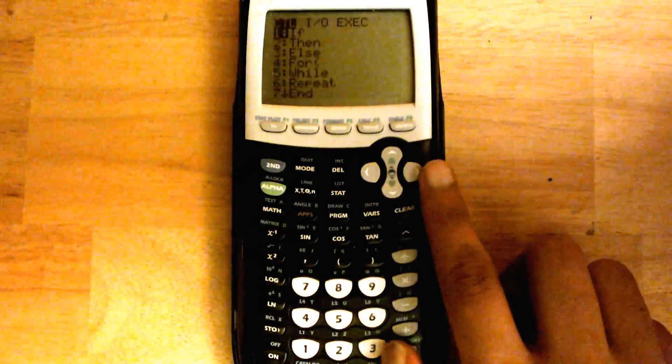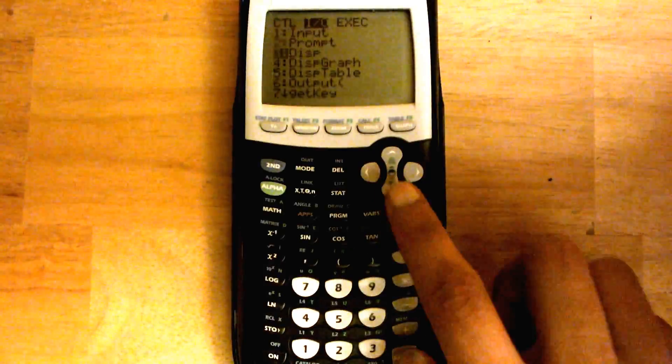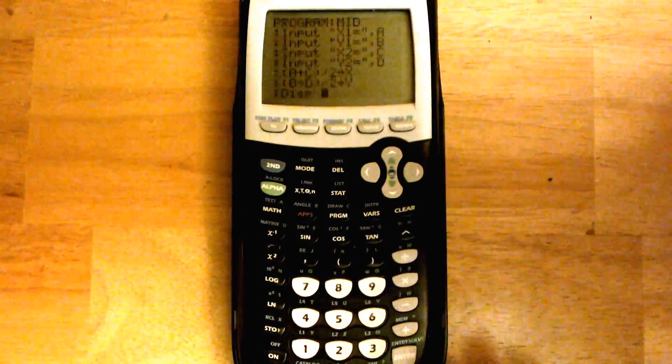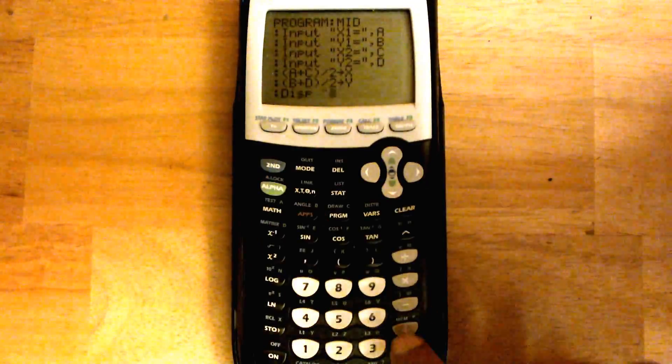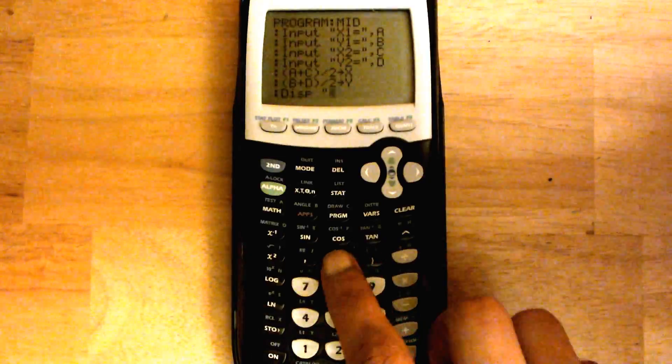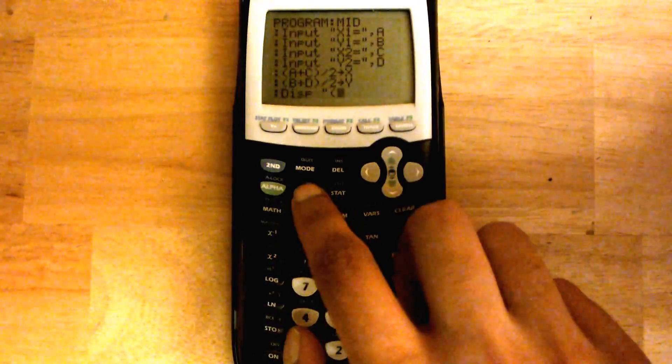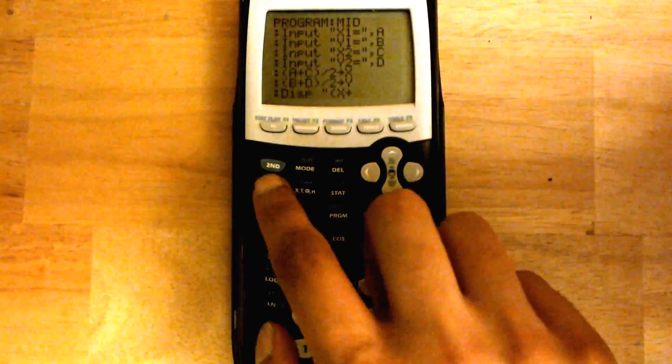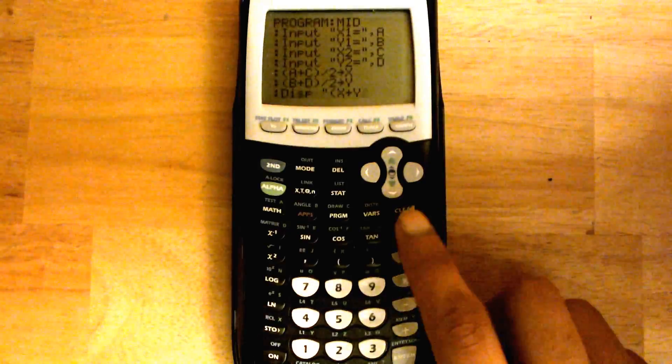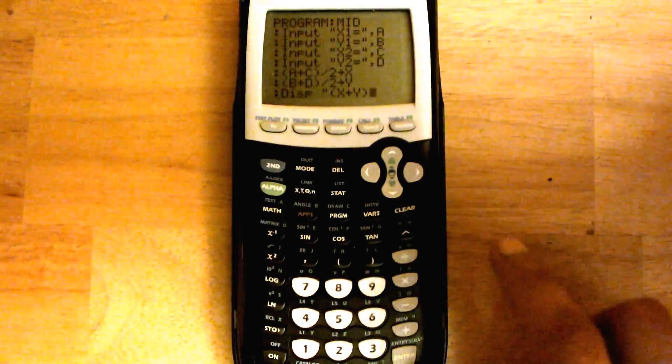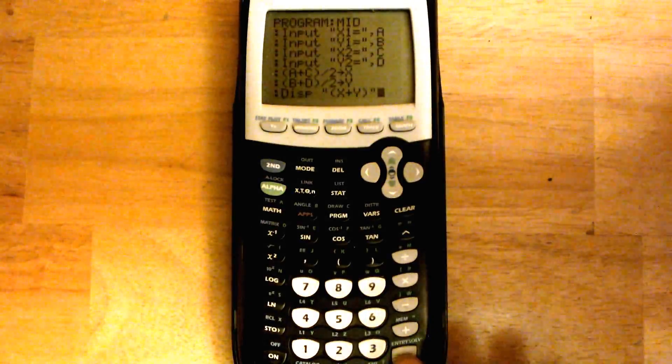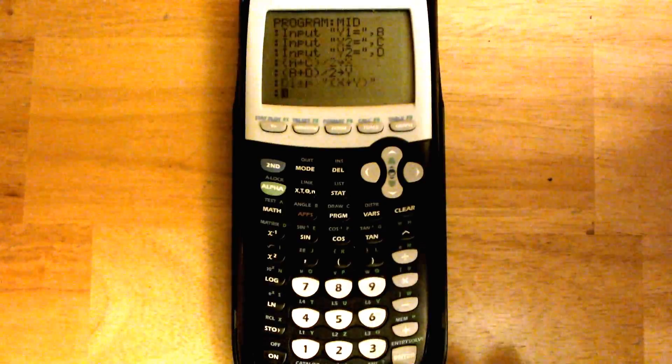Then we're going to hit program, slide over one. Then we're going to go to display this time. And then we're going to do alpha plus, parenthesis, x plus, alpha 1. Close the parenthesis. And then alpha plus.